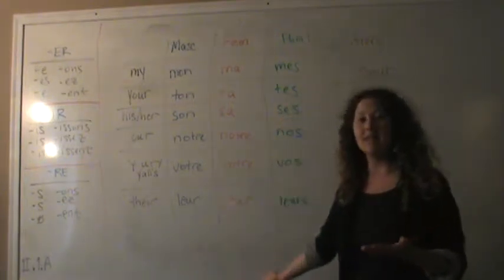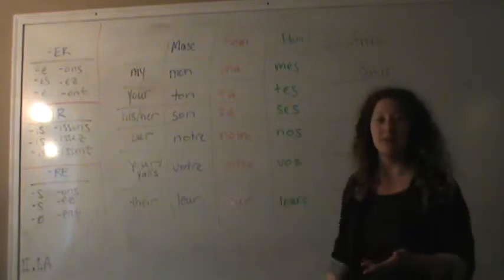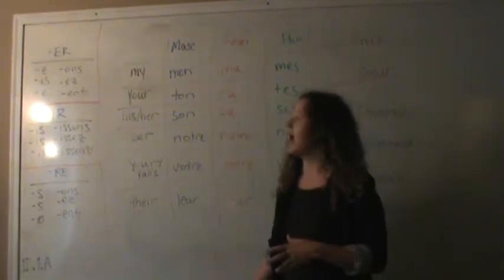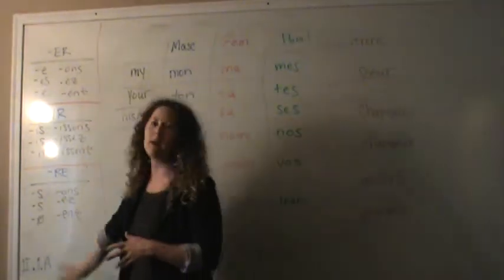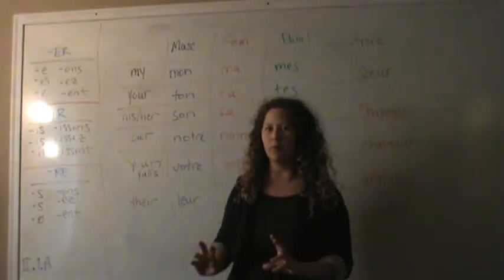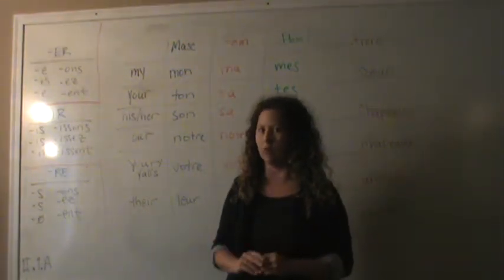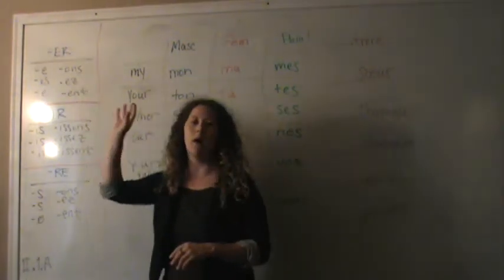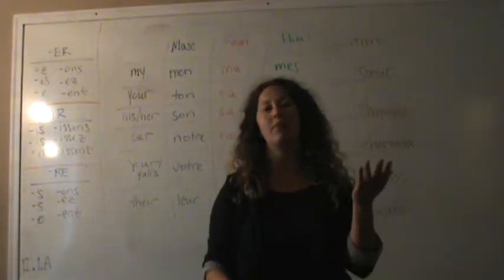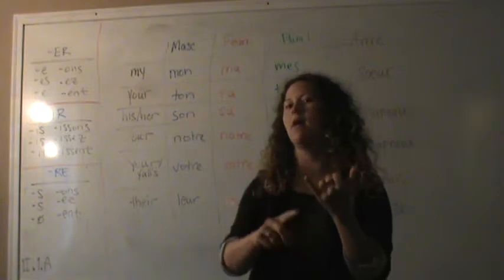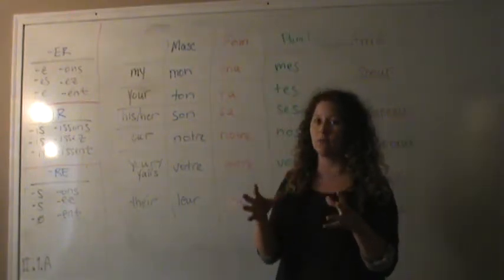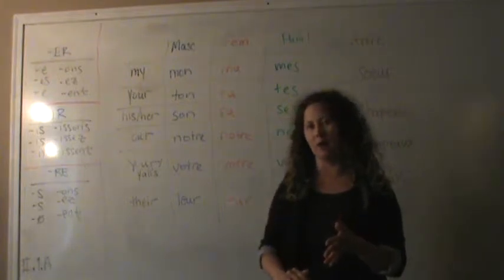Obviously, you're going to recognize all of this, hopefully. This is your possessive adjective chart. And then over here are your regular conjugations of verbs. I just want to briefly review these really quickly with you. For an ER verb, as you remember, all verbs in French, their infinitive endings are either ER, IR, or RE. And these, in the regular form, follow a particular pattern.